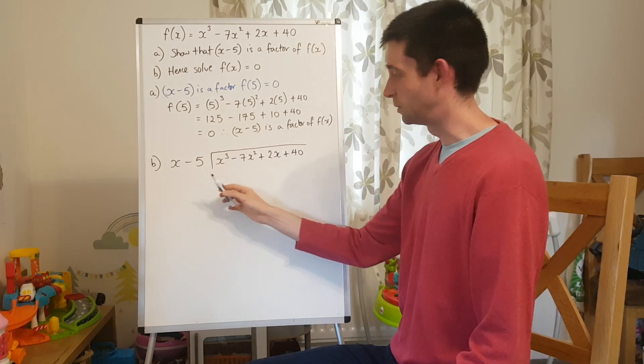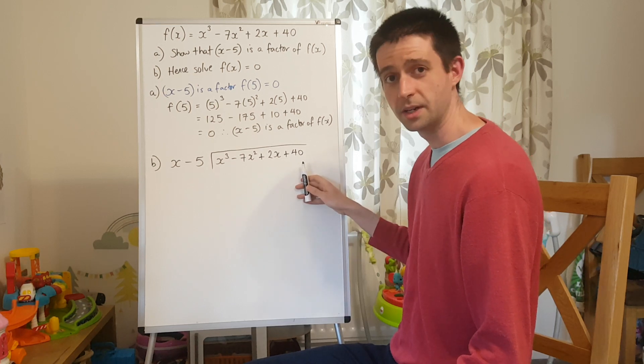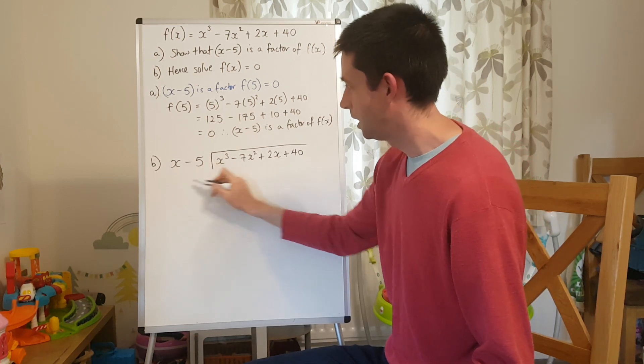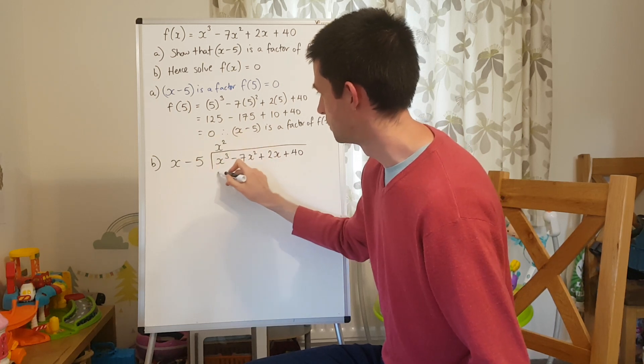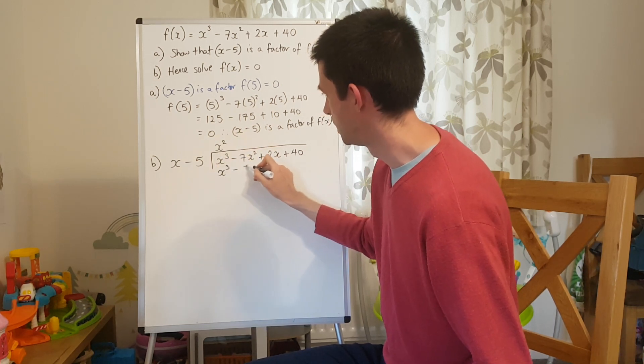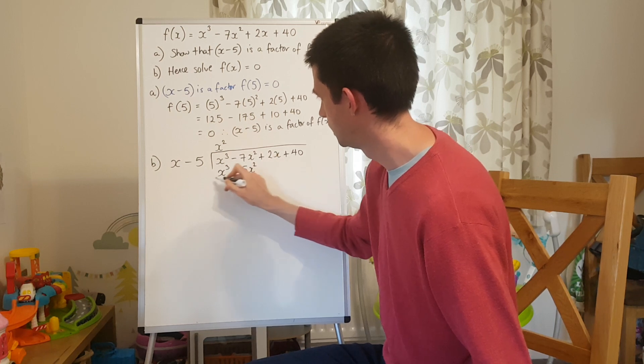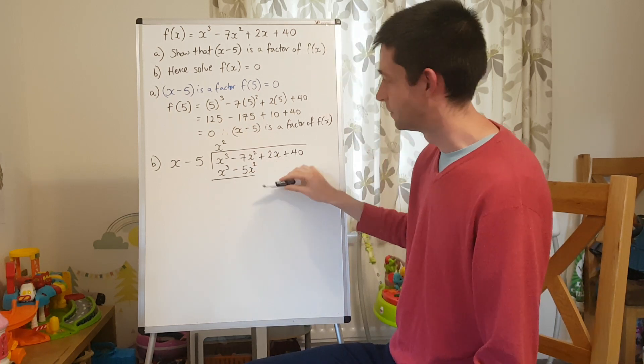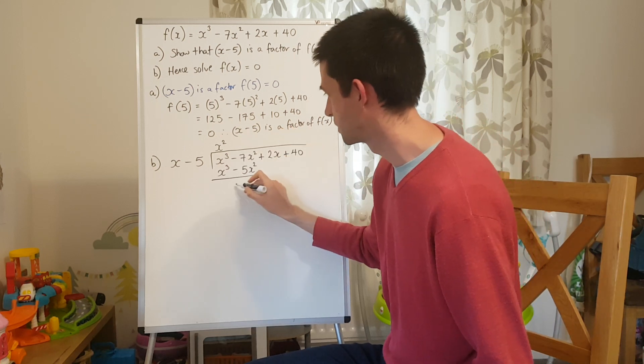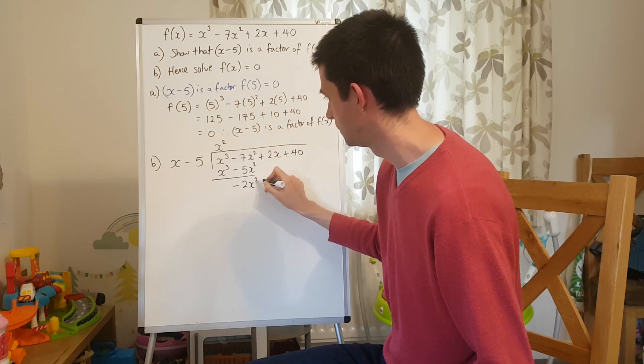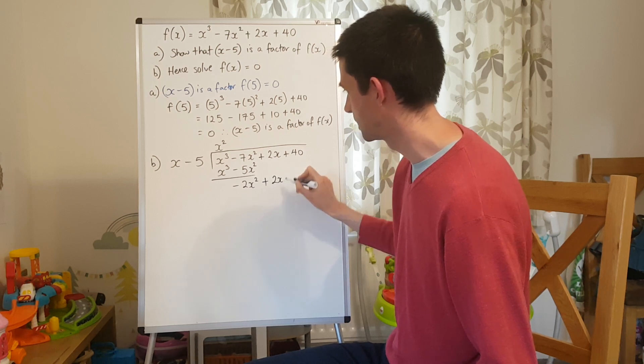x minus 5 out of the front of the bus stop. The function of x that we're trying to divide into goes here. x into x cubed goes x squared, multiply back x cubed minus 5x squared, and subtract to find the remainder. Negative 7x squared, take away negative 5x squared, negative 2x squared, bring down the plus 2x.